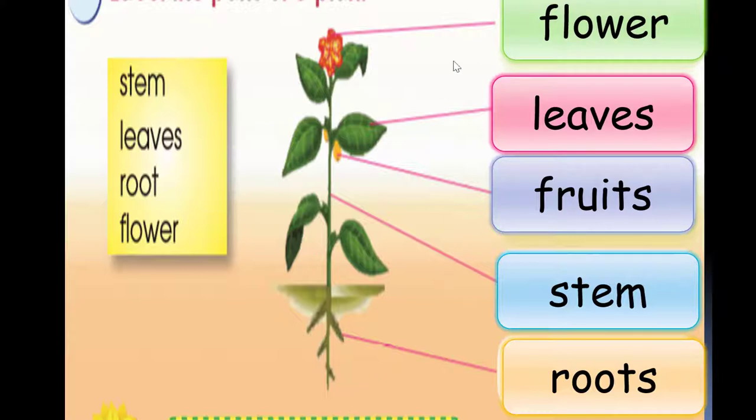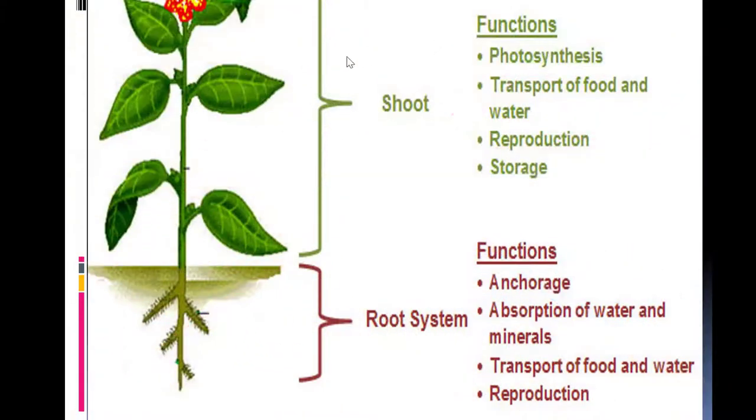The parts under the soil is the root system. The parts above the soil is the shoot system.